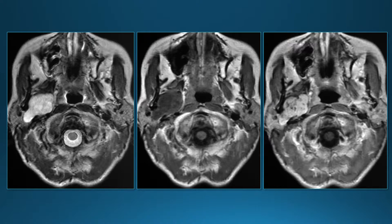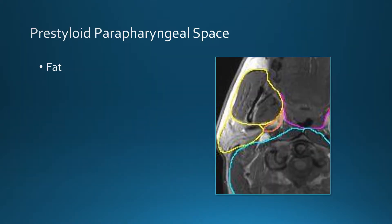The next patient has a mass seen on T2-weighted images, pre-contrast T1, and post-contrast T1. This mass is next to the pharyngeal mucosal space, so we can describe it as being in the parapharyngeal space. The parapharyngeal space has two compartments: a pre-styloid and a retrostyloid. This one is in the pre-styloid parapharyngeal space.